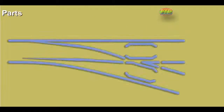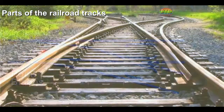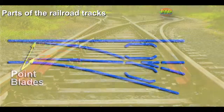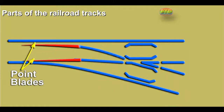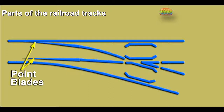Parts of the railroad tracks. Points, also called switch rails or point blades, are the movable rails which guide the wheels towards either the straight or the diverging track. They are tapered on most switches, but on stub switches they have square ends. In ordinary conversation it is common to use the word 'switch' when referring to a turnout, which is technically incorrect.